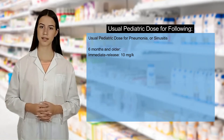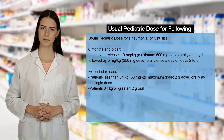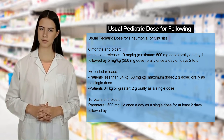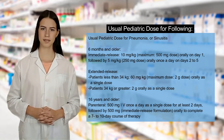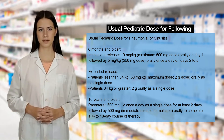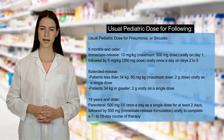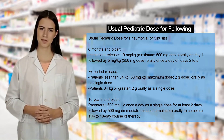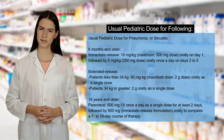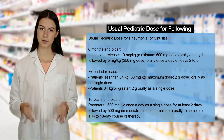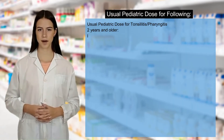Usual pediatric dose for pneumonia or sinusitis, 6 months and older: Immediate release, 10 mg/kg (maximum 500 mg) orally on day 1, followed by 5 mg/kg (maximum 250 mg) orally once a day on days 2 to 5. Extended release, patients less than 34 kg: 60 mg/kg (maximum 2g) orally as a single dose. Patients 34 kg or greater: 2g orally as a single dose. 16 years and older, parenteral: 500 mg IV once a day for at least 2 days, followed by 500 mg immediate release formulation orally to complete a 7 to 10-day course of therapy.